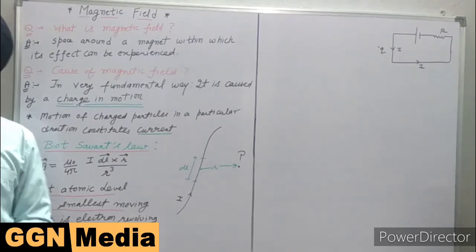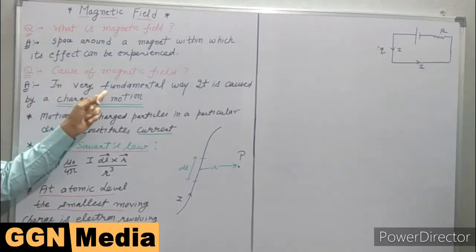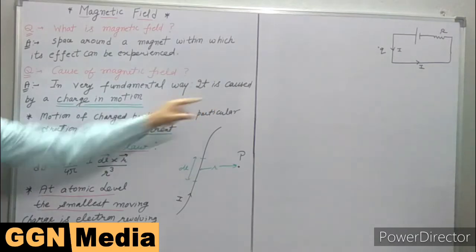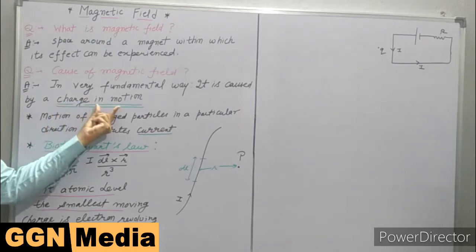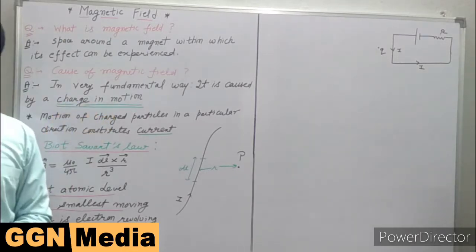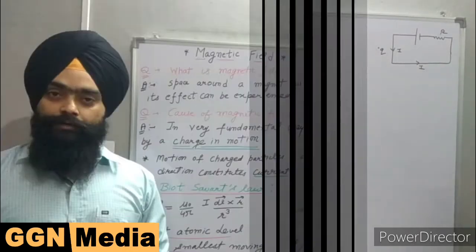The second question is: what is the cause of magnetic field? In a very fundamental way, we can see it is caused by a charge in motion. So we will discuss this thing in a little bit of detail.